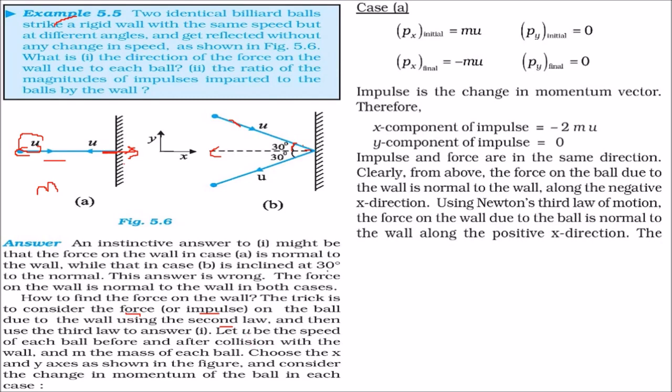Now, we will consider axis as given in this figure. And also consider the change in momentum of each ball. In this case, first, if this is U, this is M, initial momentum is M into U.